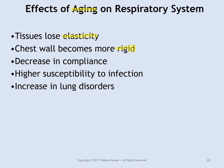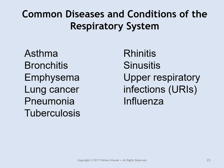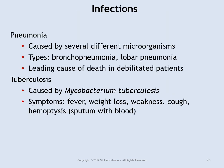As you age, tissue loses its elasticity everywhere including in your lungs, becoming more rigid and less able to expand properly or fight off infections. Common diseases include asthma, bronchitis, emphysema, lung cancer, pneumonia, tuberculosis, rhinitis, sinusitis, upper respiratory infections, and influenza.